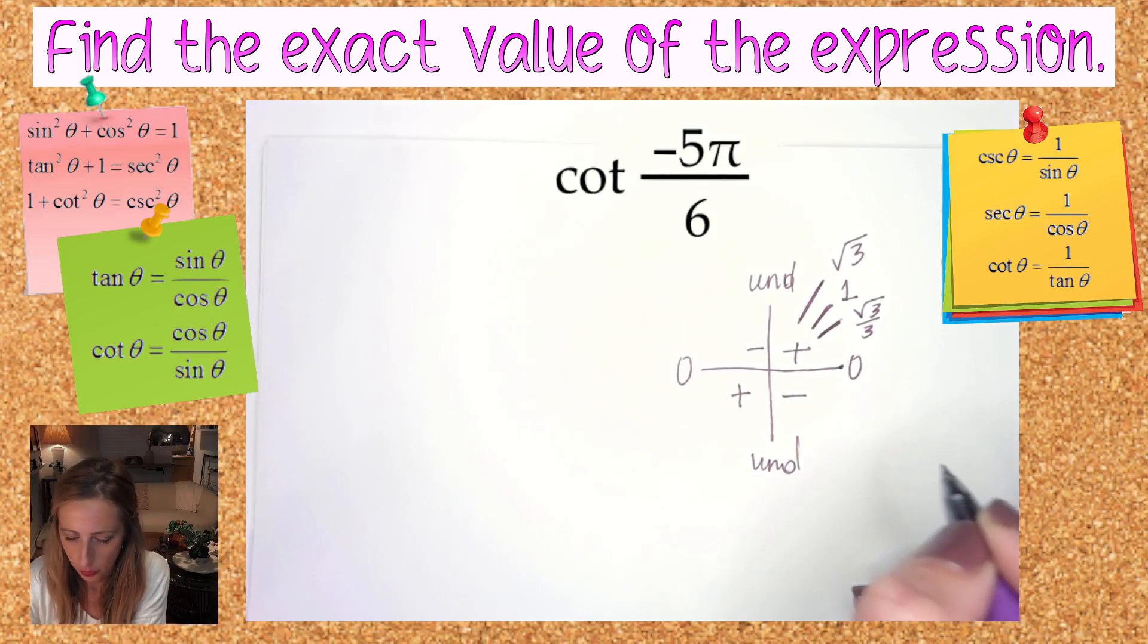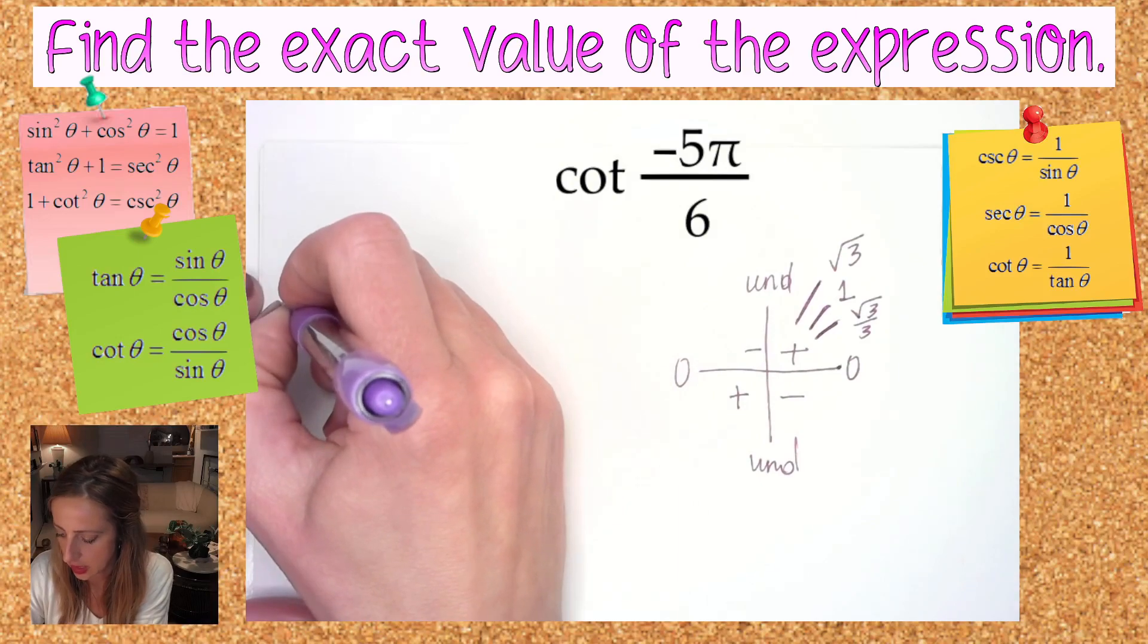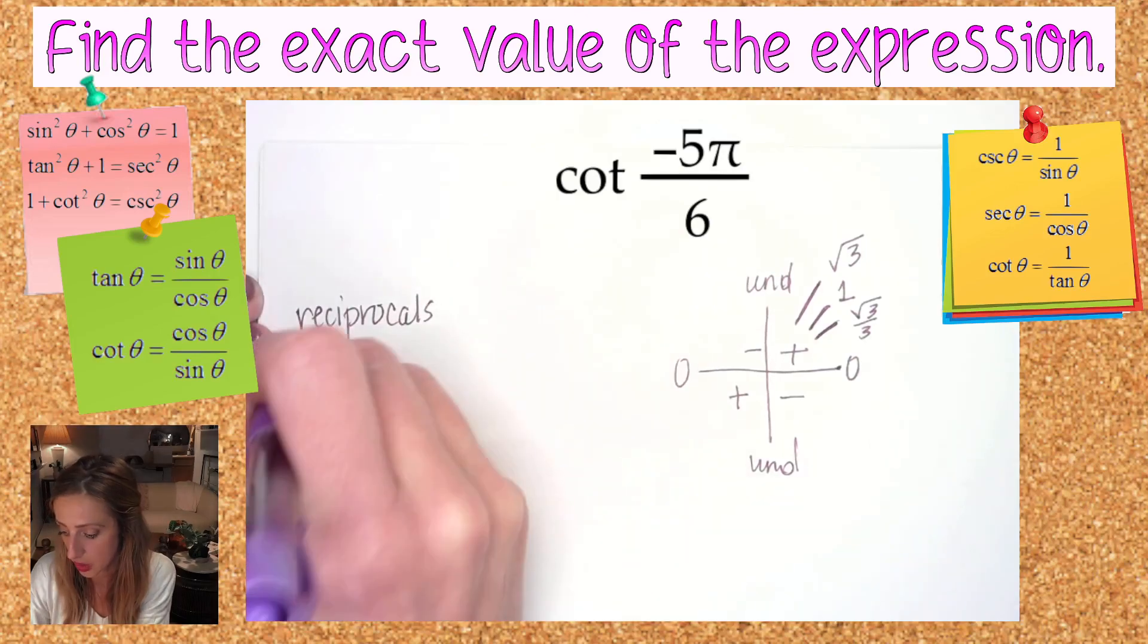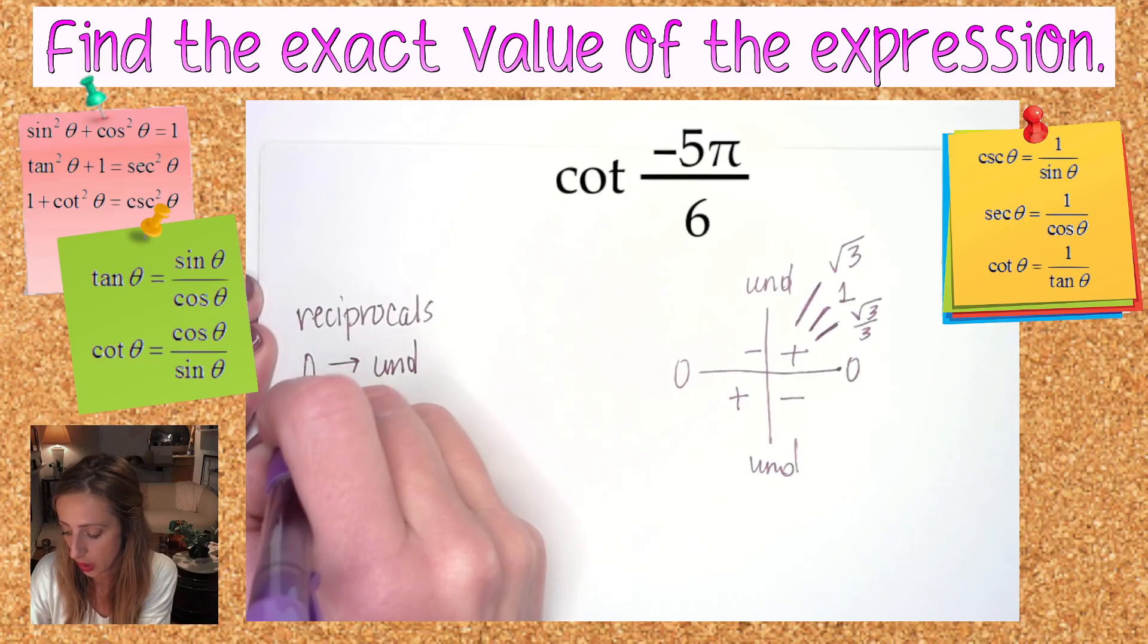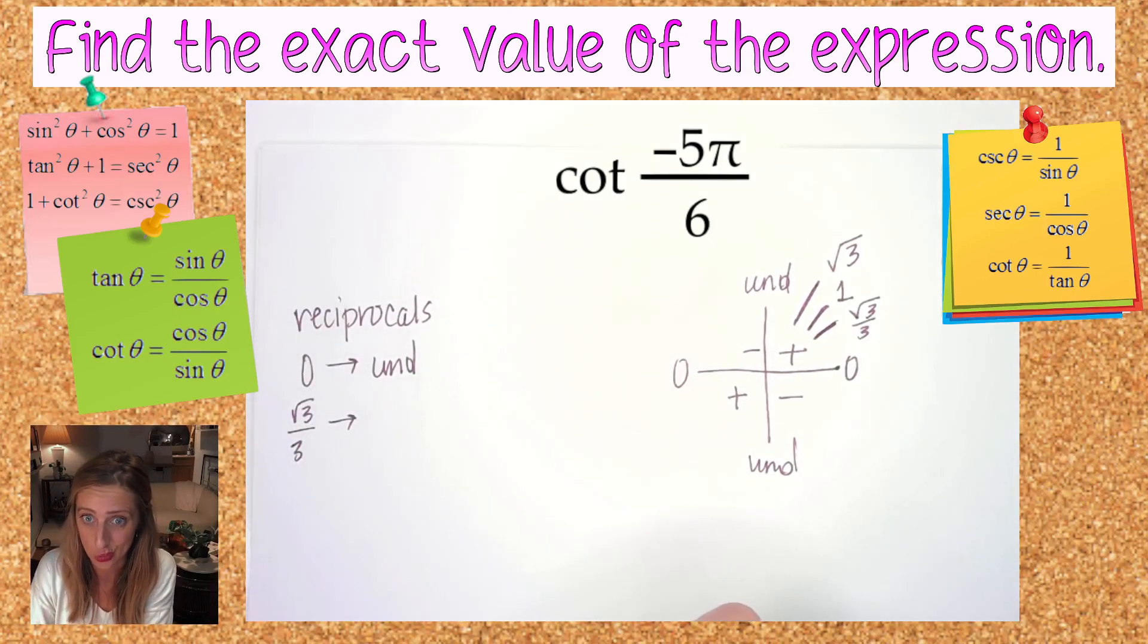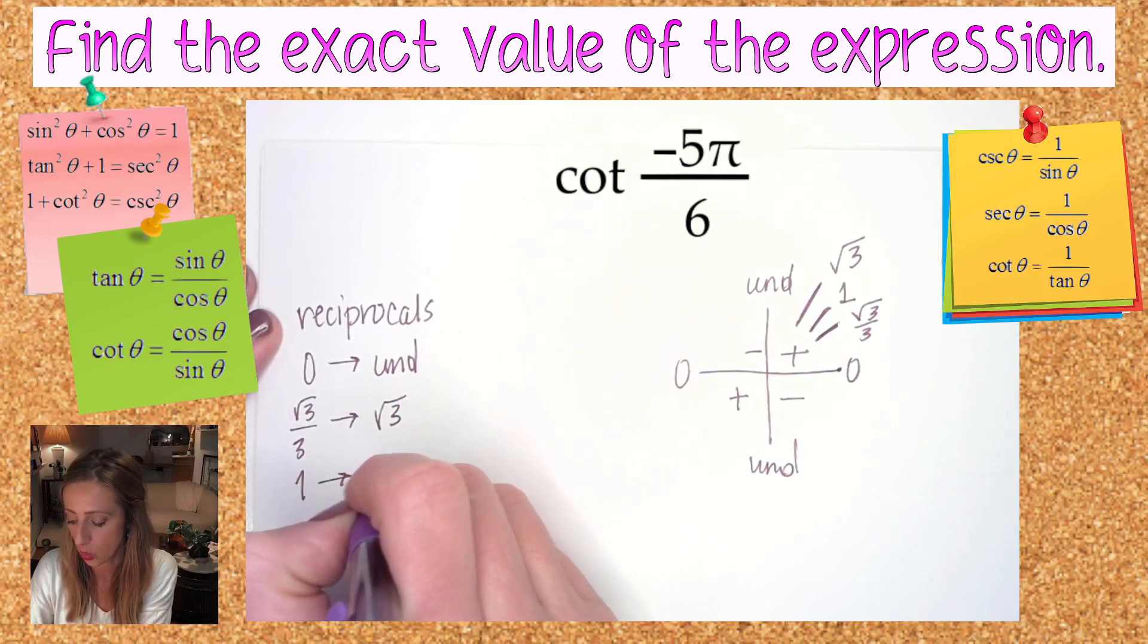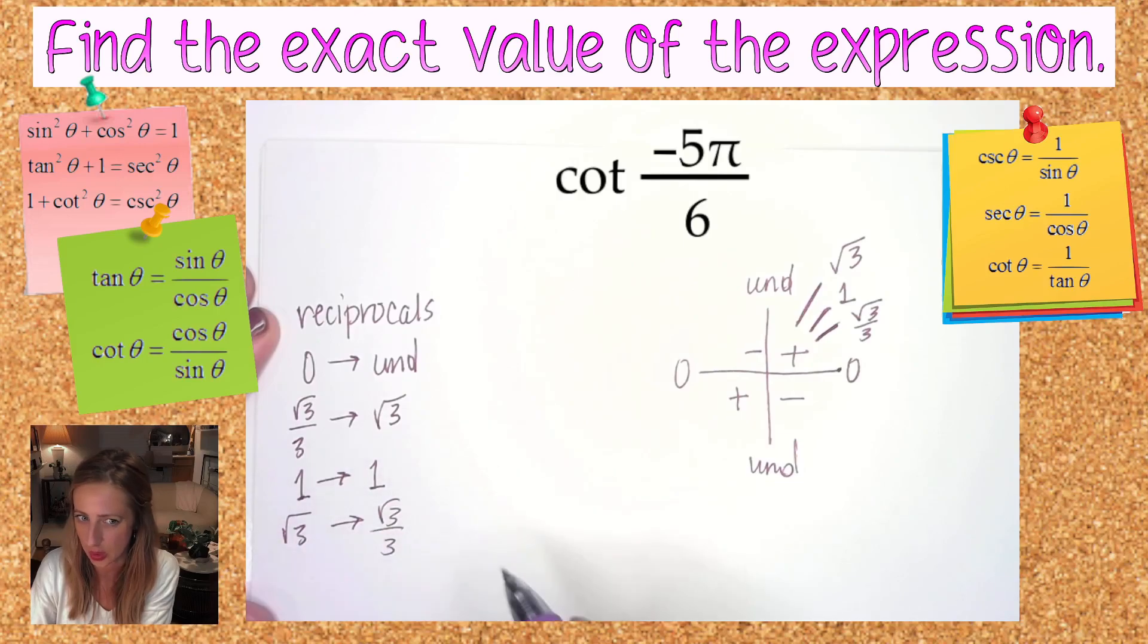Now once we have that groundwork foundation done, what else can we lay down are the reciprocals of the tangent values. What's the reciprocal of 0? Undefined. What's the reciprocal of √3 over 3? These are things that you should know. √3. The reciprocal of 1 is 1. The reciprocal of √3 is √3 over 3. Remember these are really two-way streets.